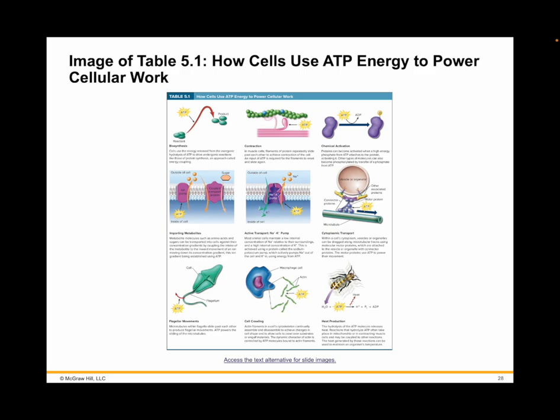So there you have both processes: one converts energy from the sun into ATP and uses it to fix CO2 into carbon, and the second — respiration — breaks down that potential energy stored in sugars to create ATP. Cells use this energy for biosynthesis, contraction via actin and myosin, chemical reactions, heat production, cell crawling, flagellar movements, importing metabolites, and transport via the sodium-potassium pump. Please revisit Putting the Chapter to Work on page 102, and also the Retracing the Learning Path to review for your test.